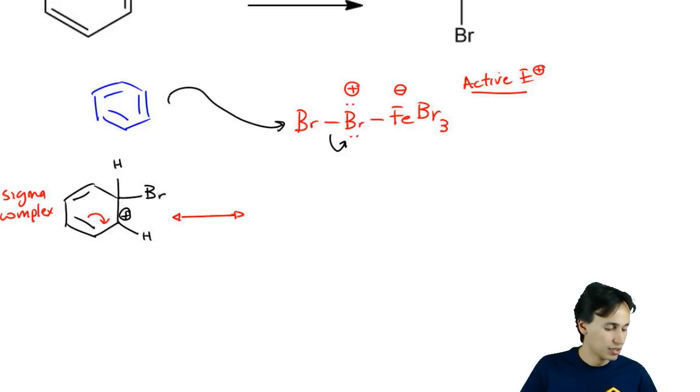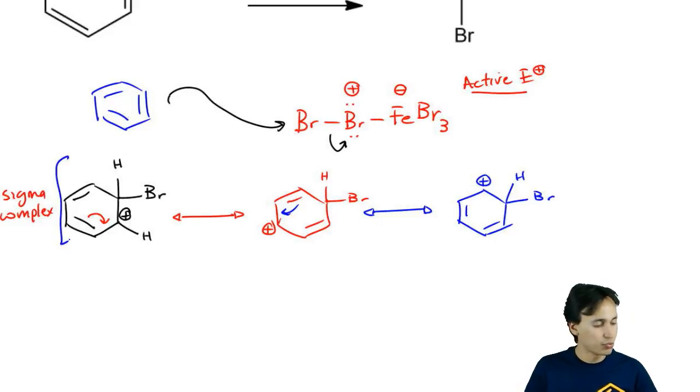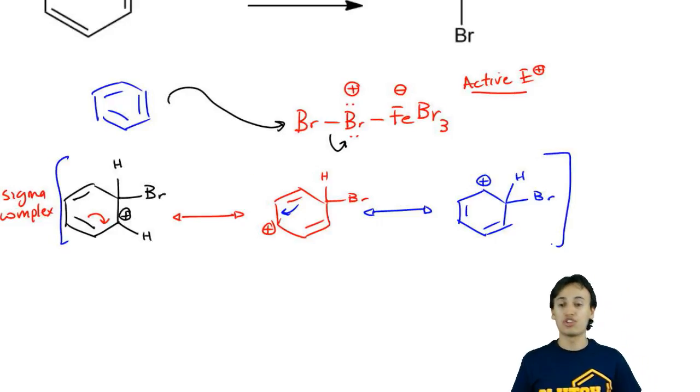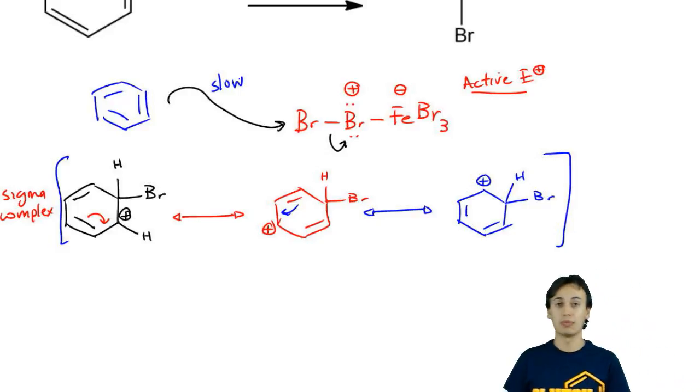Let's just draw those really quick. We know that this double bond can resonate to three different positions. What we're going to end up with is three resonance structures that are stabilizing that intermediate. As you guys recall, this is the slow step of the reaction, making the intermediate.